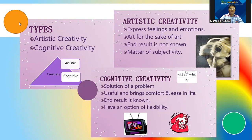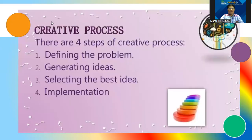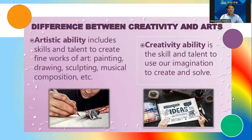The four steps of the creative process are: first, define the problem; second, generate ideas; third, select the best idea; and fourth, implement it. The difference between creativity and artistry: creativity is the skill and talent to use our imagination to create and solve, while artistic ability includes the skills and talent to create fine works of art like painting, drawing, sculpting, musical composition, and more.